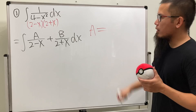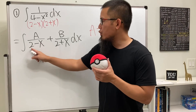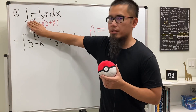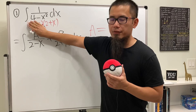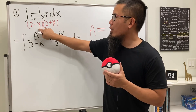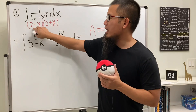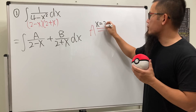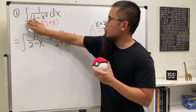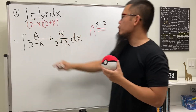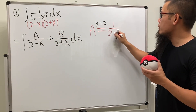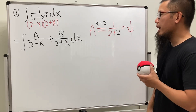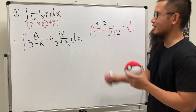For A, it has the denominator (2 minus x). We go back to the original fraction and cover up the same denominator, and we ask ourselves how can we make 2 minus x equal to 0. The answer is x has to be equal to 2. So we put 2 into the remaining x, and we see that A will just be 1 over (2 plus 2), and we get 1 over 4 for that.